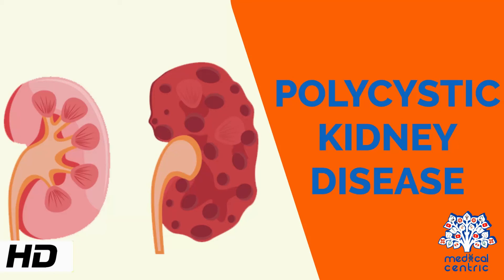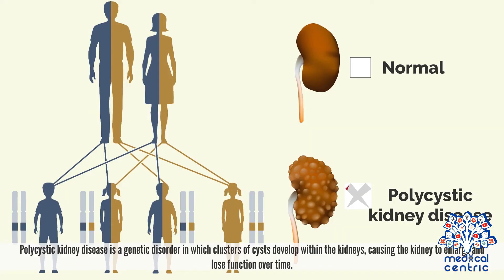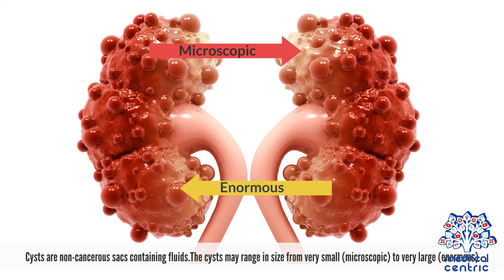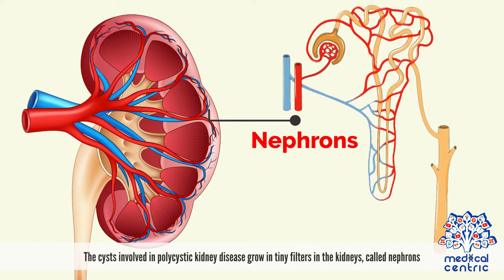Today's topic is polycystic kidney disease. Polycystic kidney disease is a genetic disorder in which clusters of cysts develop within the kidneys, causing the kidney to enlarge and lose function over time. Cysts are non-cancerous sacs containing fluids. The cysts may range in size from very small to very large. The cysts involved in polycystic kidney disease grow in tiny filters in the kidneys, called nephrons.